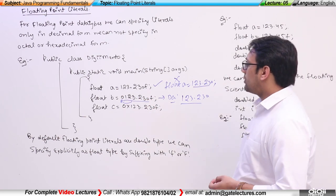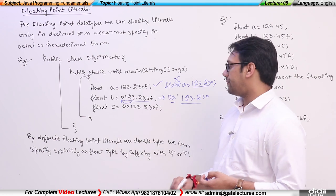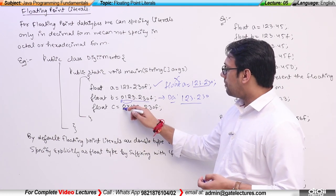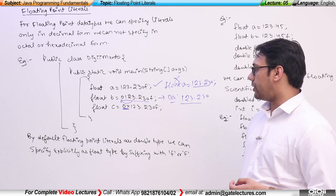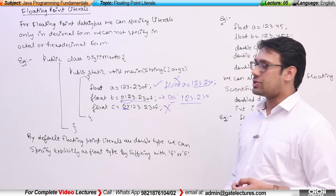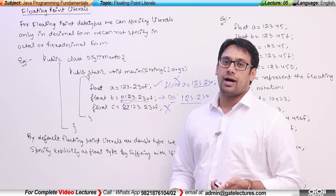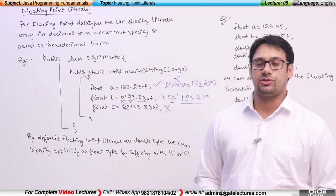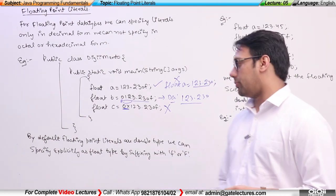Now if I write float c is equal to 0x123, because I am prefixing the number with 0x, it will not consider it a valid expression — it will say this is a malformed expression, meaning this expression is not properly formulated and is not correct.